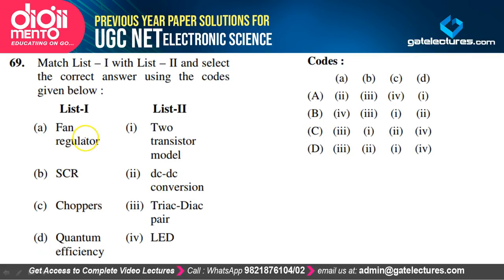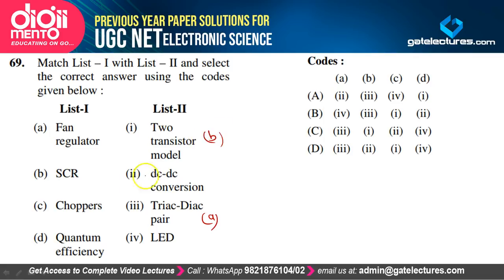Match power electronics/devices: Fan regulator → triac-diac pair (A-3); SCR → two-transistor model (B-1); Choppers → DC-to-DC conversion (C-2); Quantum efficiency → LEDs (D-4). Option C satisfies our explanation.